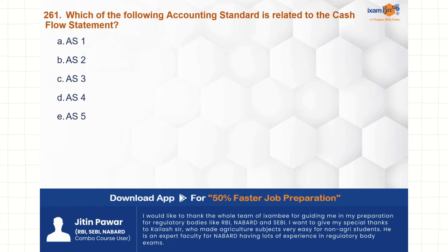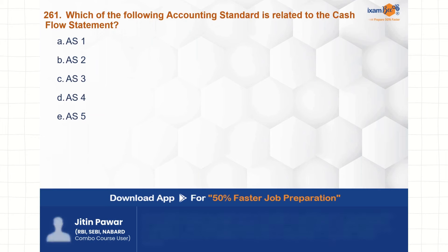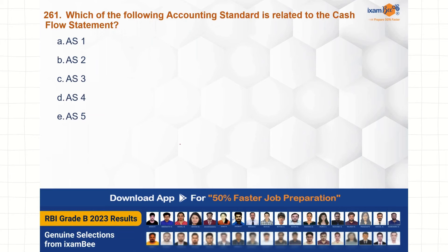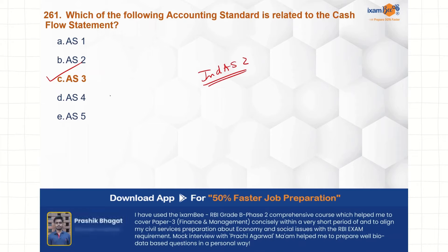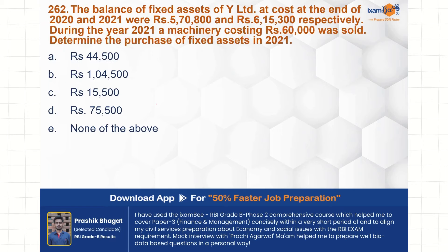Which accounting standard is related to the cash flow statement? The correct answer is AS3, which is option C. Do let me know in the comment section which is its respective Ind AS.